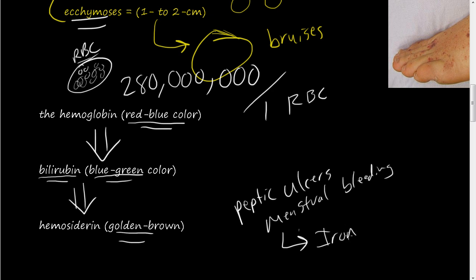So when people have peptic ulcers from chronic non-steroidal anti-inflammatory use or other causes of these peptic ulcers or when people have abnormally long menstrual bleedings, you can lose a lot of iron because there's iron inside each one of these hemoglobins. And because there's about 280 million hemoglobin molecules inside one red blood cell, you can lose a lot of iron and then you can get iron deficiency anemia.